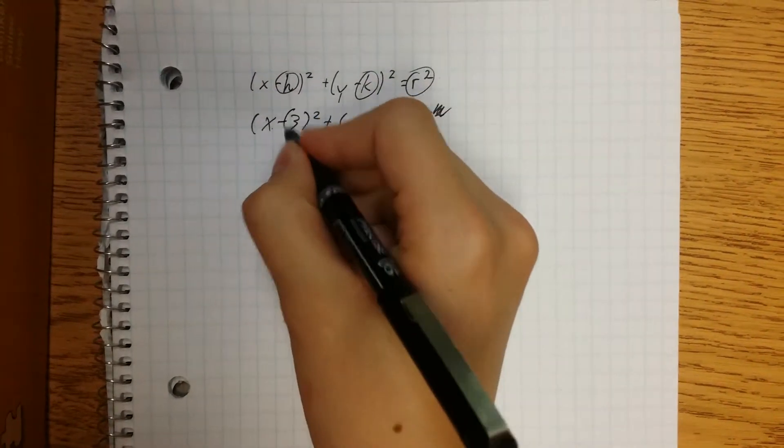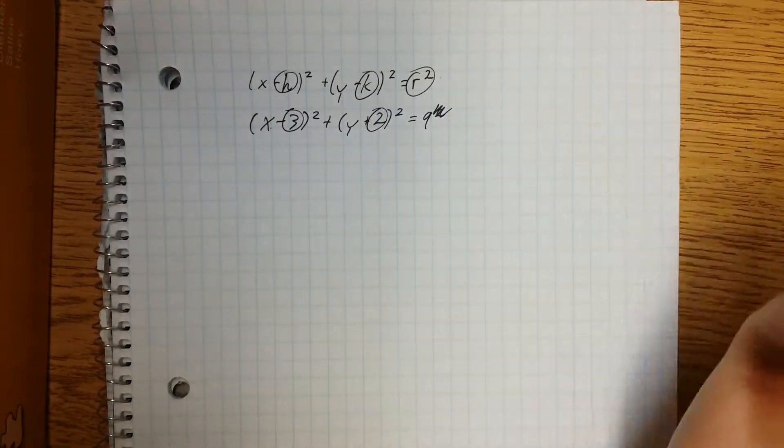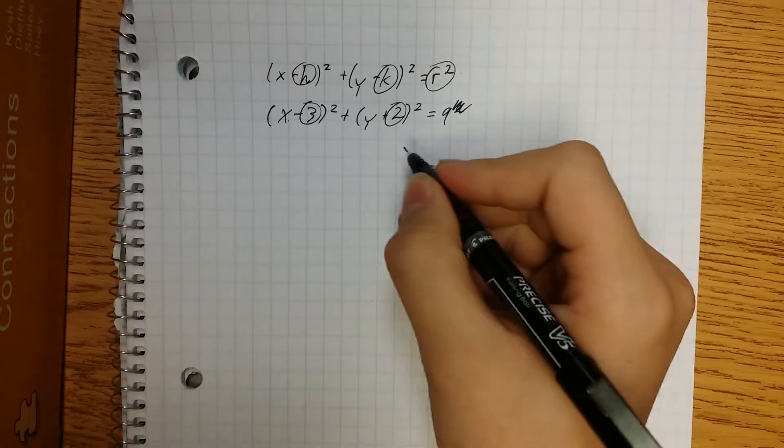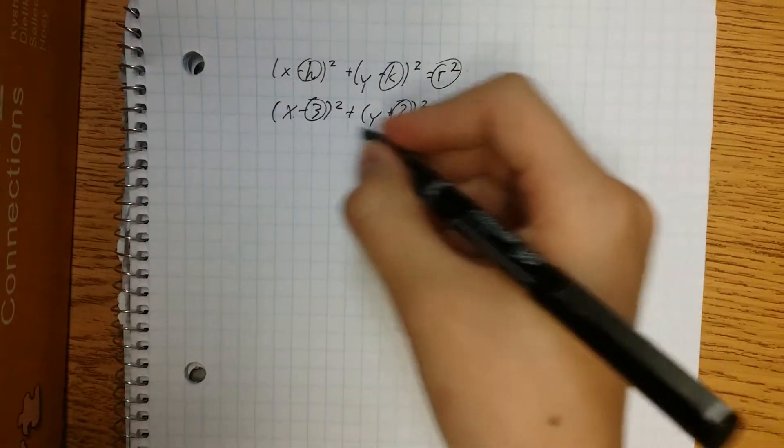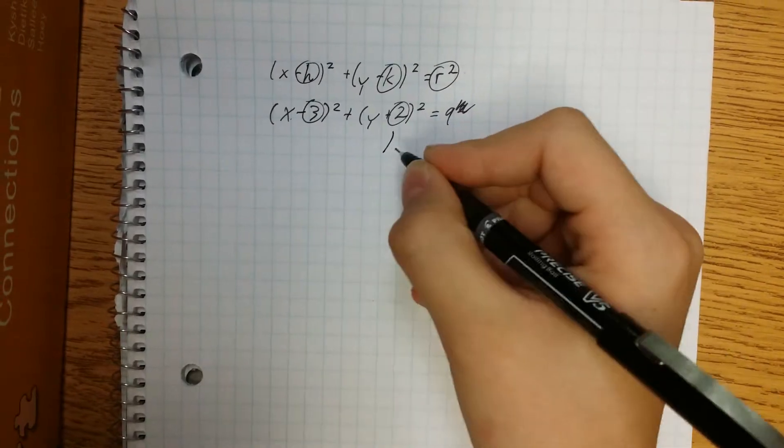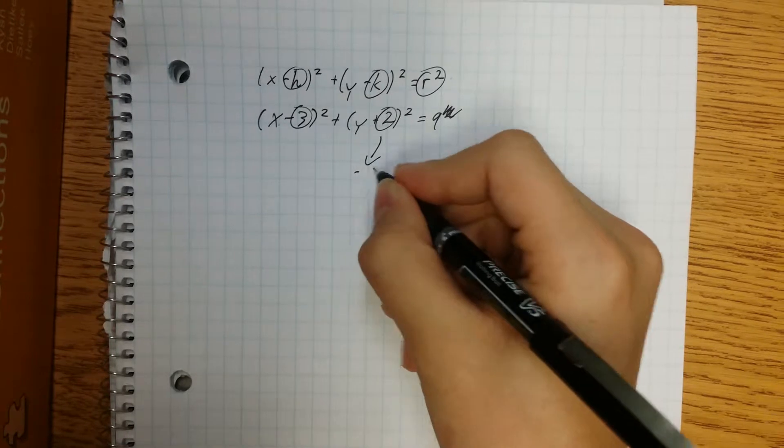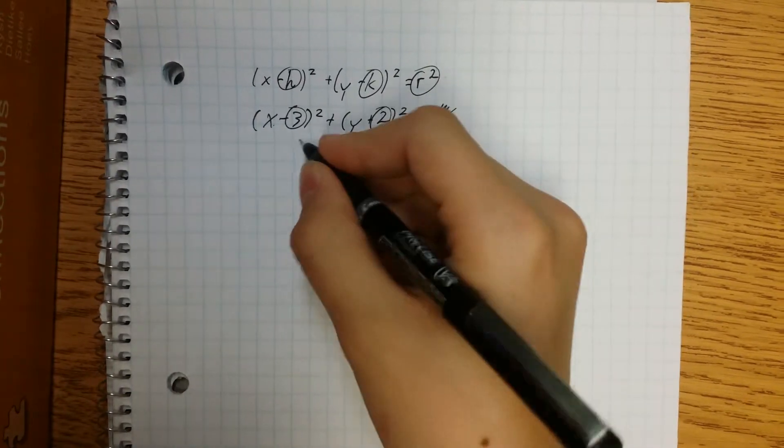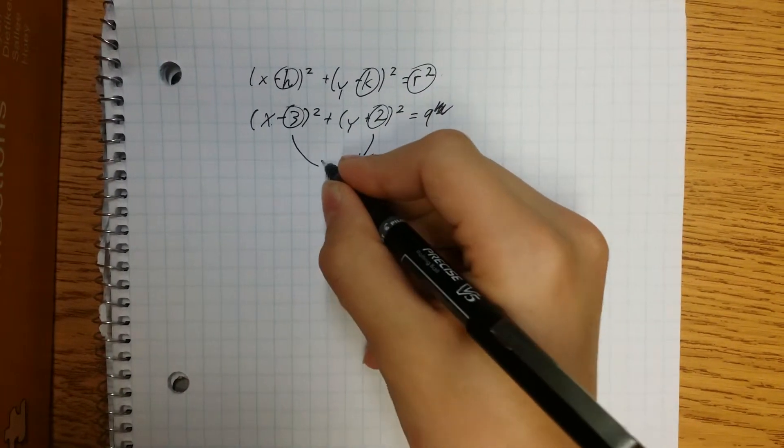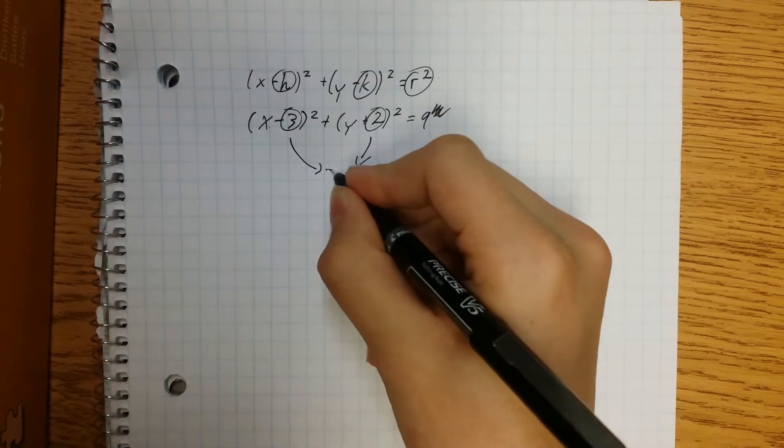These are going to be our points for the center of the circle. This one is the y value because it's next to the y. And this one is our x value because it's next to the x.